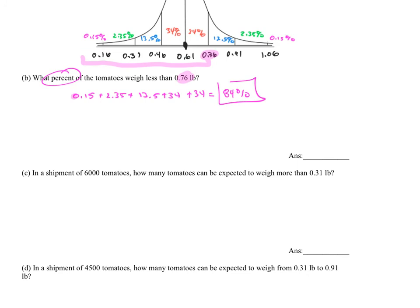Let's look at the next one. It says in a shipment of 6,000 tomatoes. So they are giving us a quantity. So most likely they're going to want a quantity as an answer. How many tomatoes can be expected to weigh more than 0.31 pounds? So I'm going to come in here. I'm going to look at the chart. Here's 0.31. They want to know how many weigh more than that. So I'm going to add all those numbers together above 0.31. Let's go ahead and do so now.